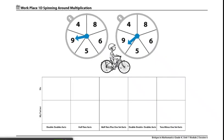These are the directions for Workplace 1D Spinning Around Multiplication. The materials you'll need to play this workplace is one Spinning Around Multiplication record sheet for the partners to share, one spinner, and two pencils.